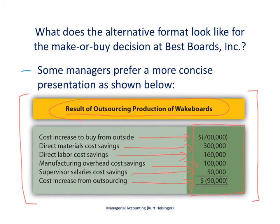One clarification: when you see a number in parentheses, that implies the result of that line item is a reduction in profit. When you see positive numbers, those line items result in an increase in profit. The bottom line being negative means that if we outsource, our profit will go down by $90,000.